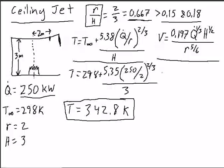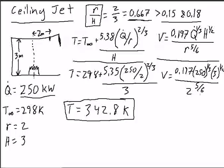So to calculate the velocity, we would use this equation. V equals 0.197 times 250 to the one-third times our height to the one-half and our radius to the five-sixths power.